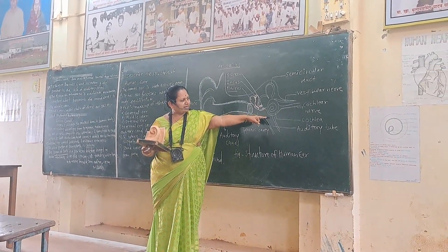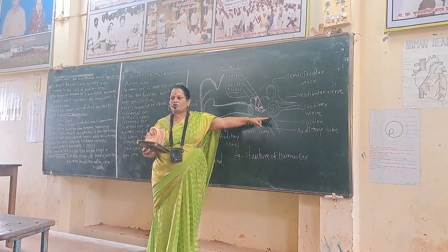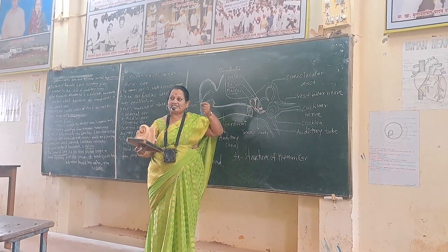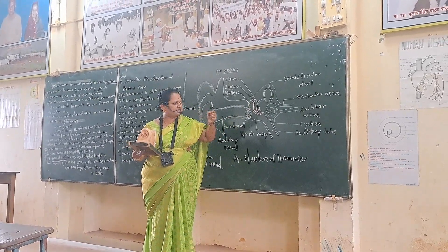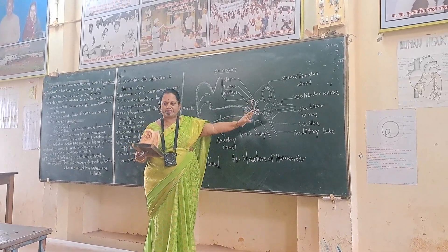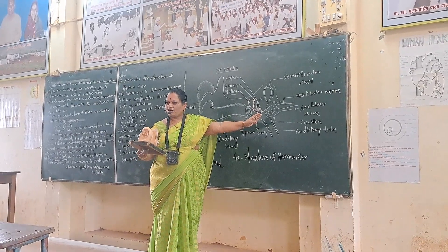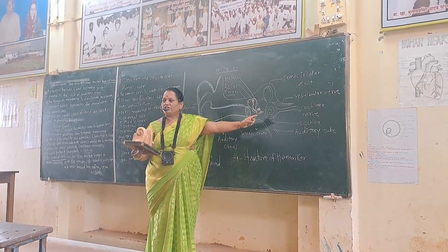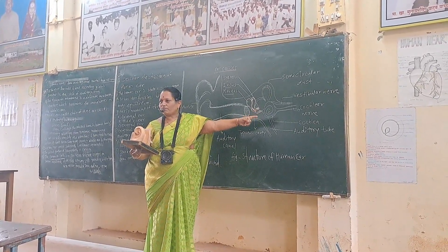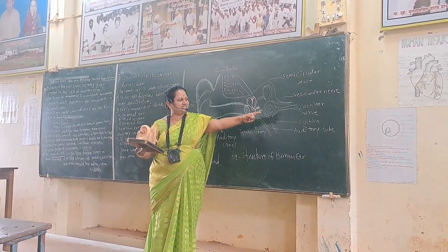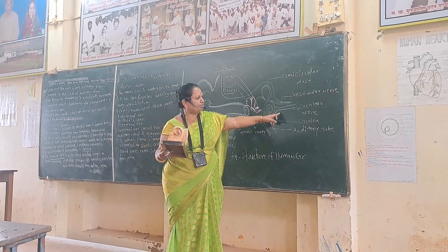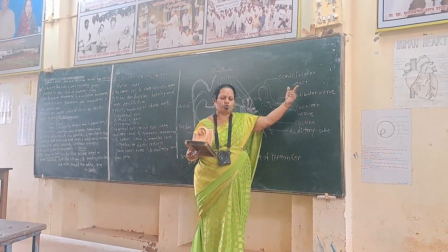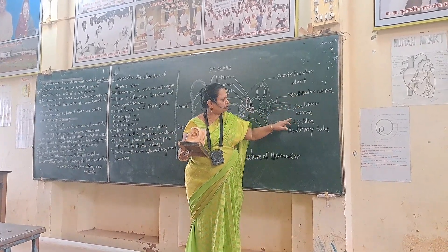At the base of the cochlea there is the presence of the organ of Corti, which transmits those vibrations or sound waves in the form of a nerve impulse.